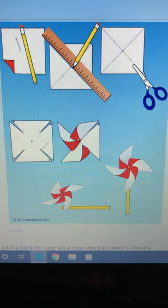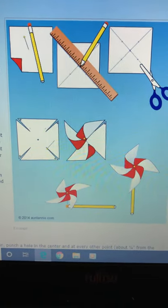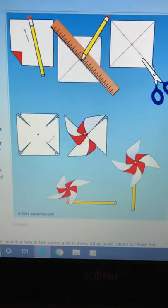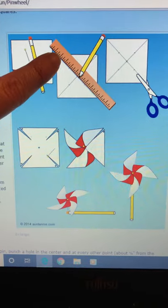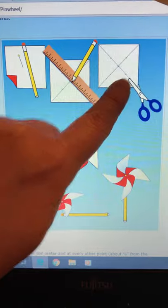The first thing to do is to decorate your square of paper. I would say more colourful the better. Once you've decorated it on both sides, ask a grown-up to help you to draw a line from here to here and here to here until you have something that looks a bit like this.